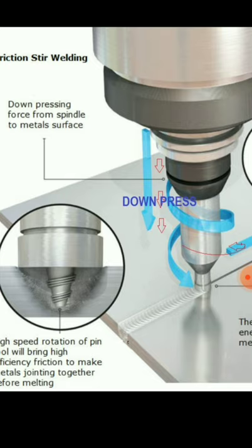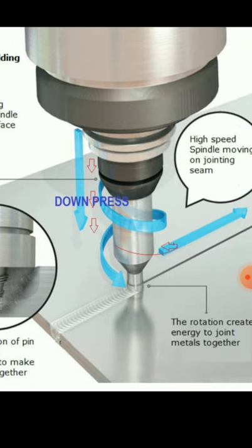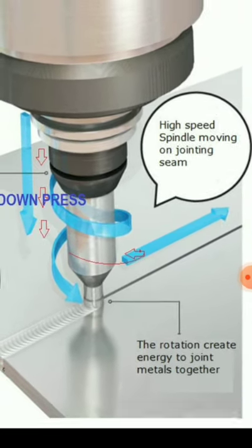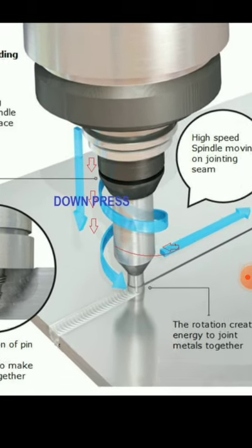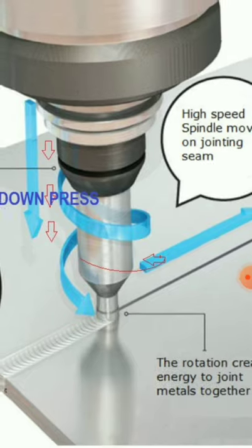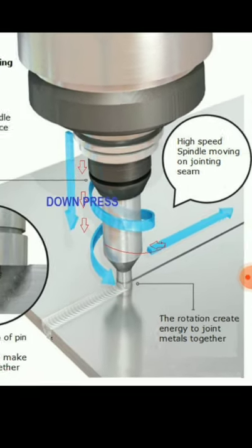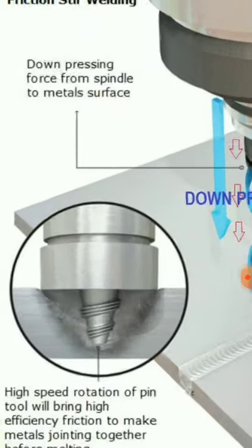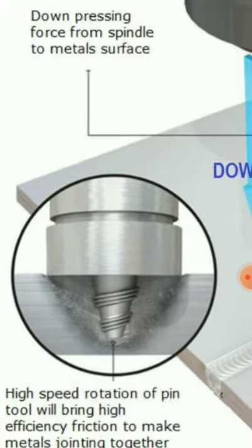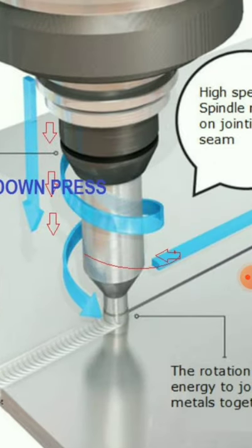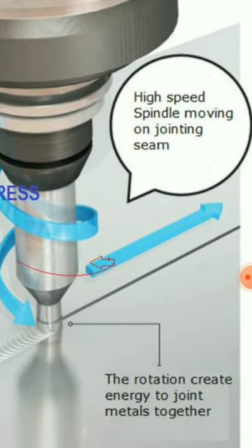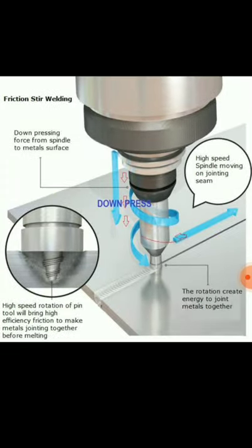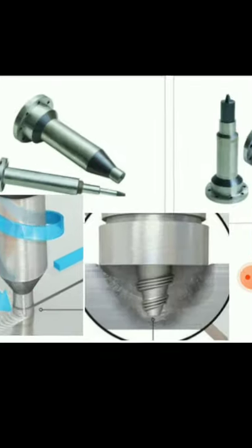You can see the downward force of the tool as it rotates and inserts into the two metal pieces. This generates heat and the tool moves forward, performing friction stir welding. You can see the high-speed rotation of the tool — this is all about friction stir welding and this is the tool.